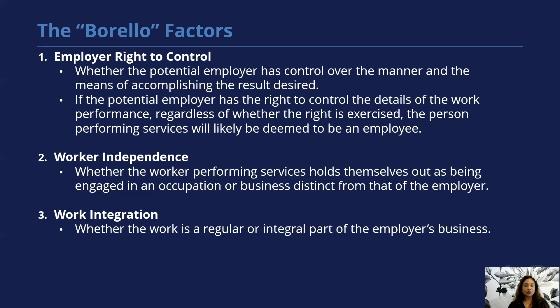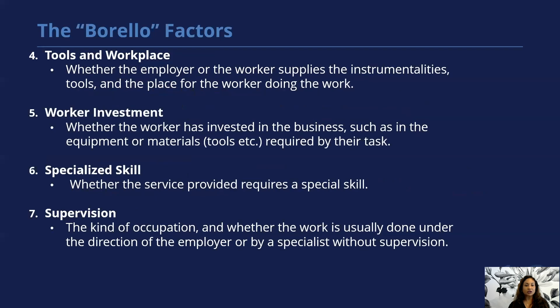The third factor is worker integration — whether the work is a regular or integral part of the employer's business. The fourth factor is the tools and workplace — does the employer or the worker supply the instrumentalities, tools, and the place that the work is being done? The fifth factor is worker's investment — whether the worker has invested in the business, such as buying their own equipment or materials for the tasks they're going to be doing.